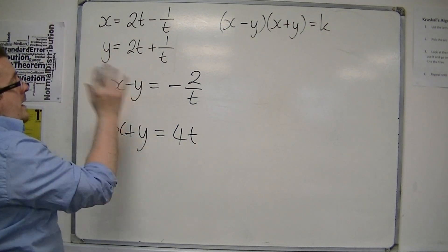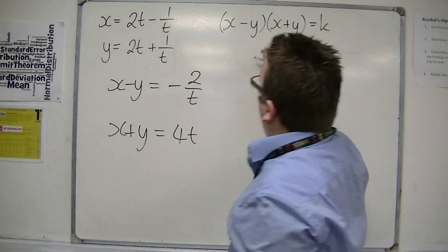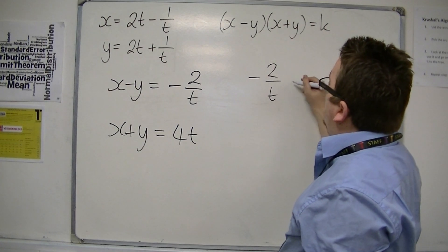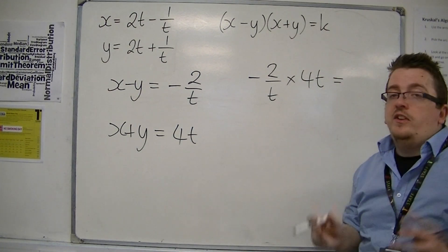So I have my x minus y, I have the x plus y, so if I substitute them into this, I have minus 2 over t times by 4t. The t's are going to cancel out.